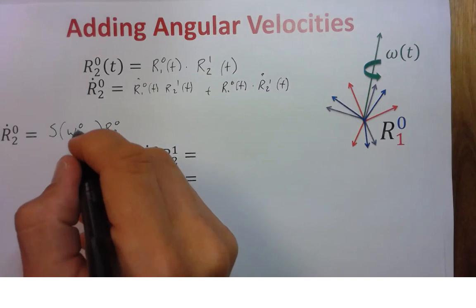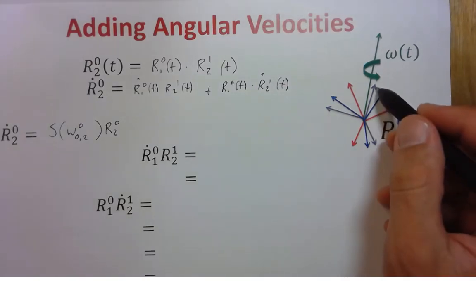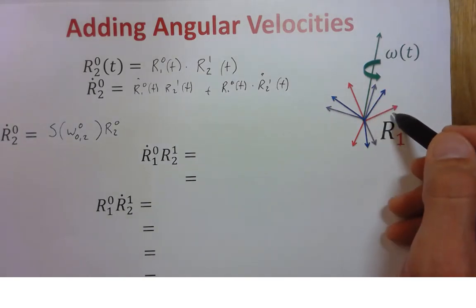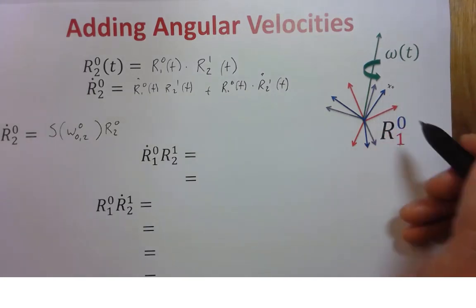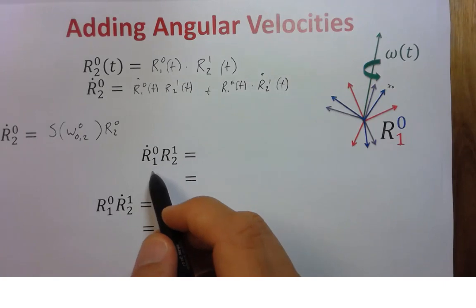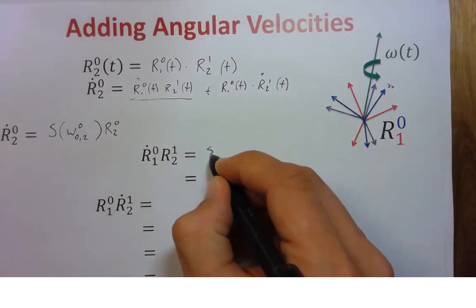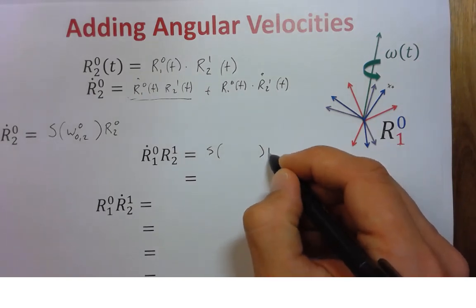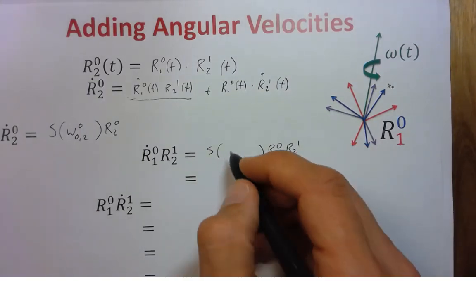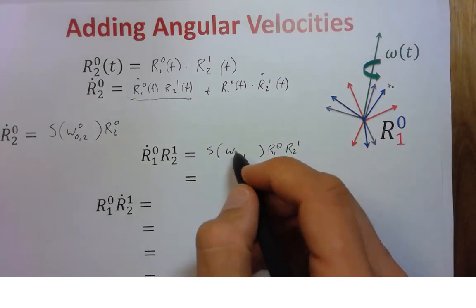We want to know how frame 2 (purple) is moving relative to the base frame (blue), with frame 1 in red. We need to identify the axis of rotation and specify which frame we're in. Expanding the first chain-rule term, we get a skew-symmetric matrix times R_{1,0} times R_{2,1}, with angular velocity omega_{0,1} in frame 0. Multiplying those two rotation matrices together gives us R_{2,0} with skew-symmetric omega_{0,1} in frame 0.